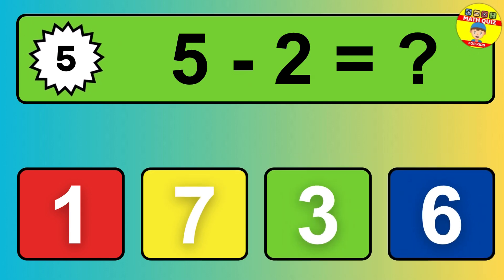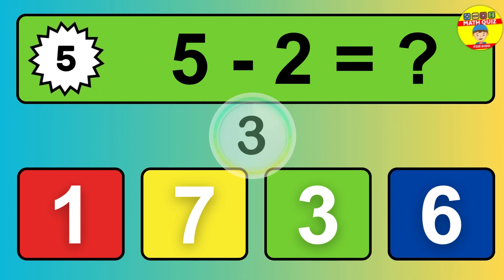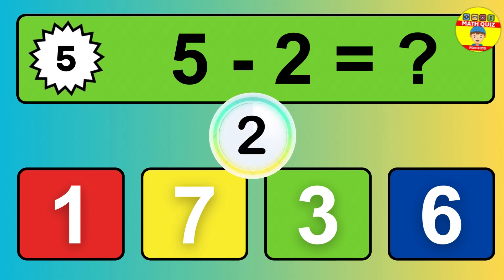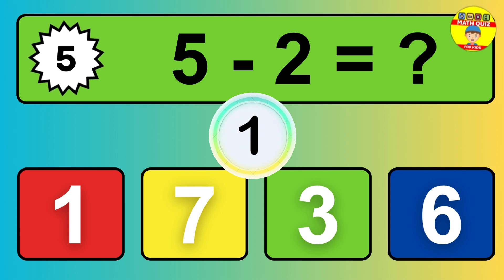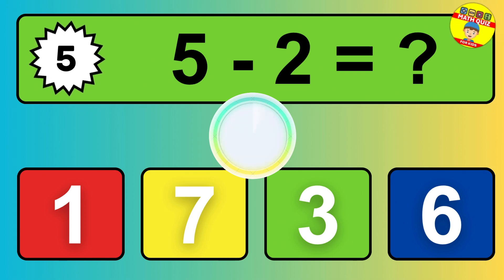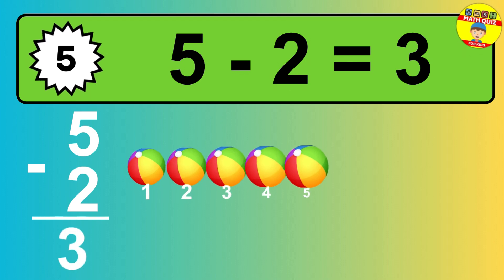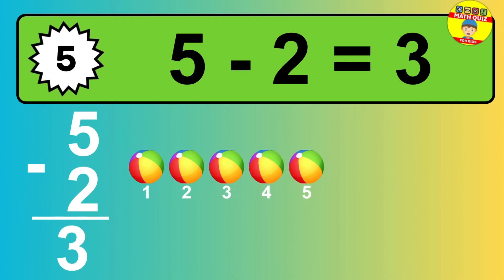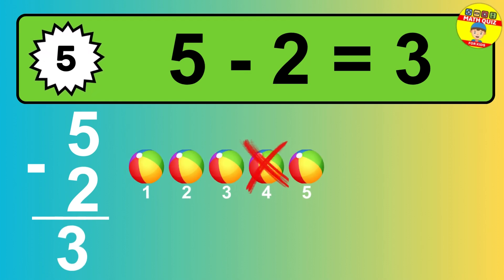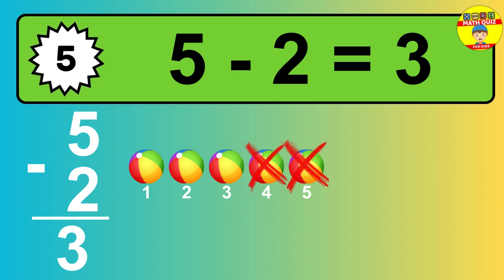Question 5: 5 minus 2 equals what? The answer is, 5 minus 2 is 3. Let's count it: 1, 2, 3.